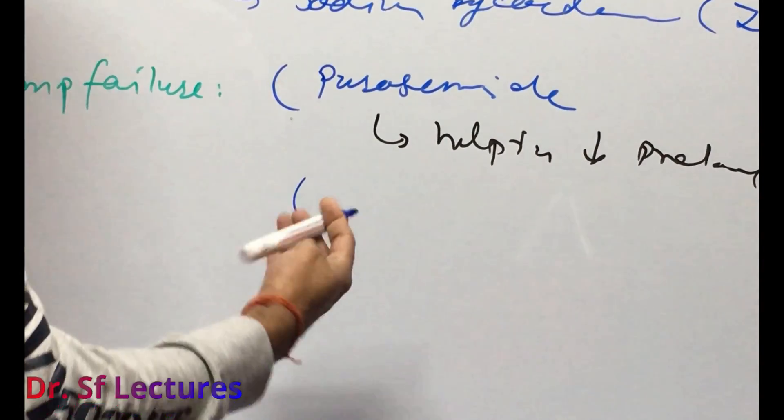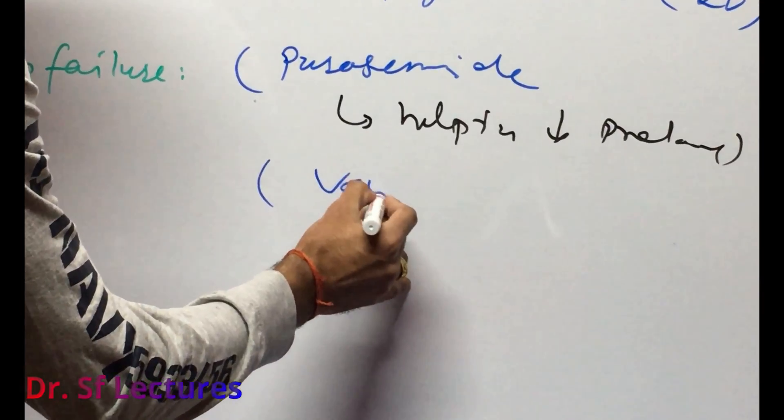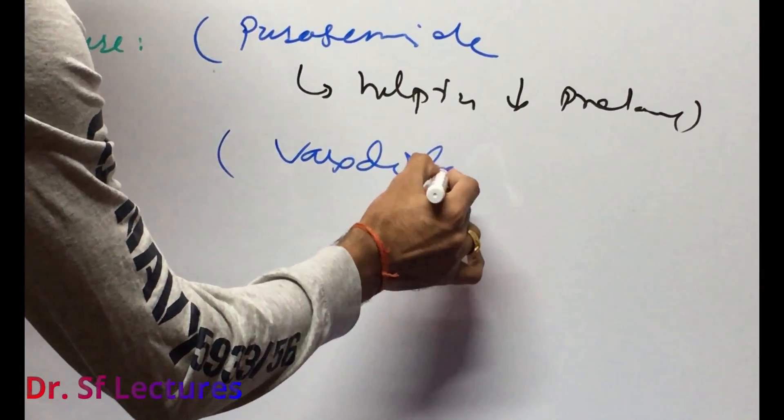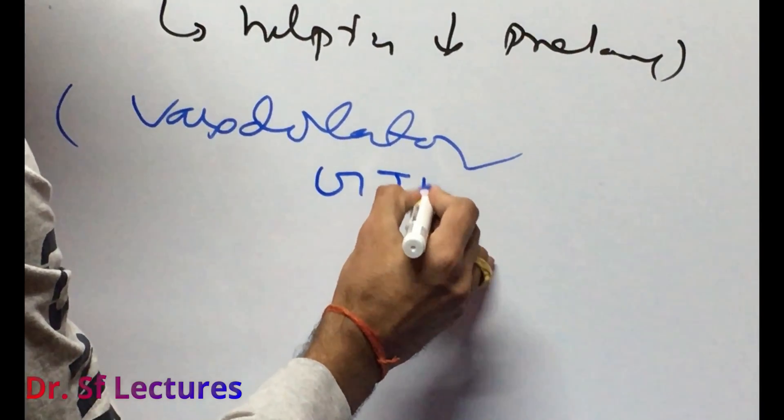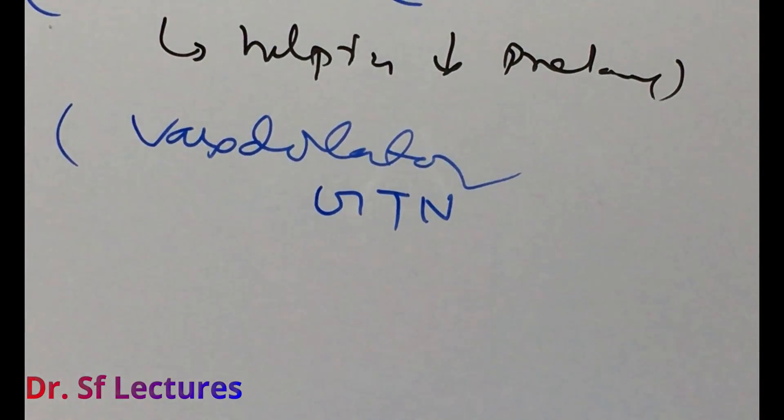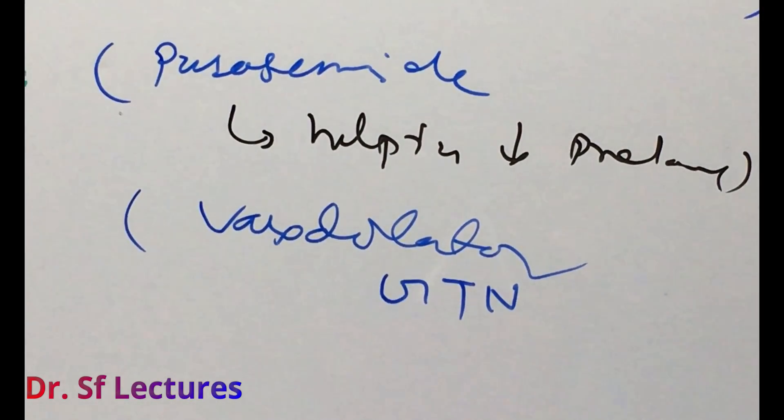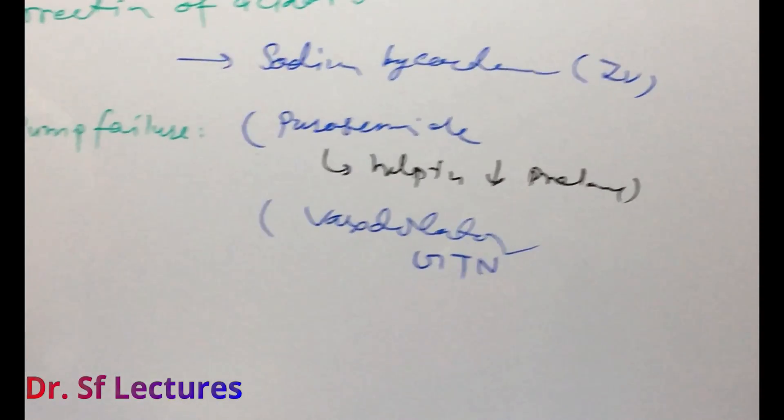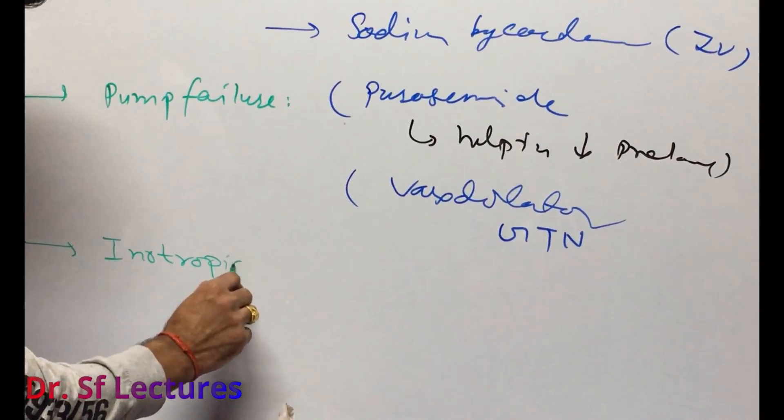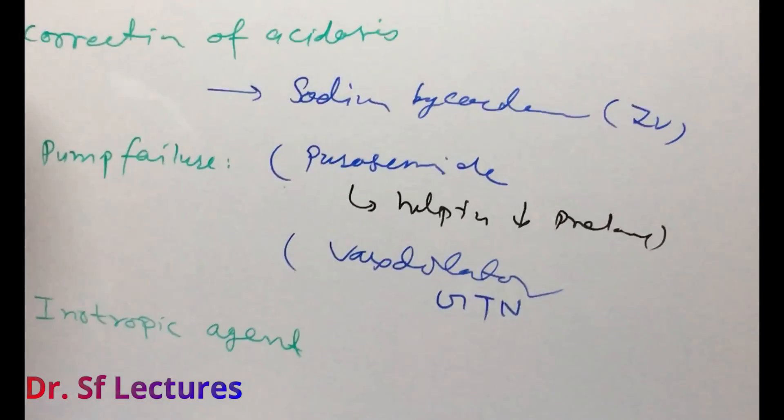We can use vasodilators like GTN, glyceryl trinitrate. We can also use inotropic agents like dopamine or dobutamine.